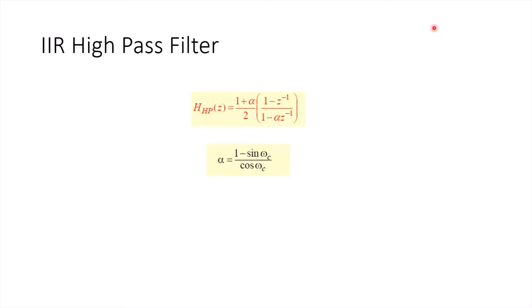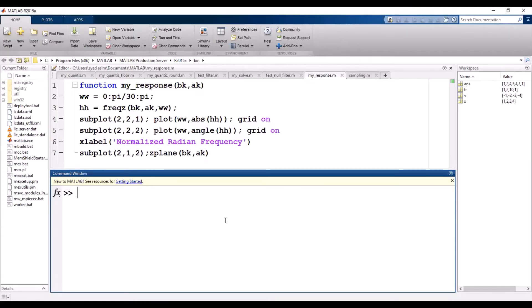So this is our MATLAB. Now we are going to implement this. Let's suppose we are going to design a high pass filter with the cutoff frequency omega_c equal to 0.75*pi.